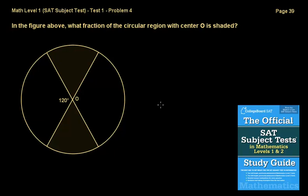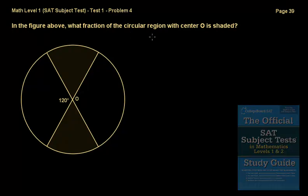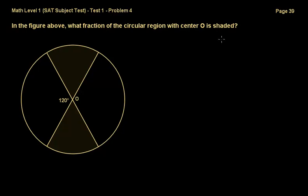Welcome back, everybody. Continuing the preparation series on SAT Math Level 1. We're now at Problem 4, which says: in the figure above, what fraction of the circular region with center O is shaded?